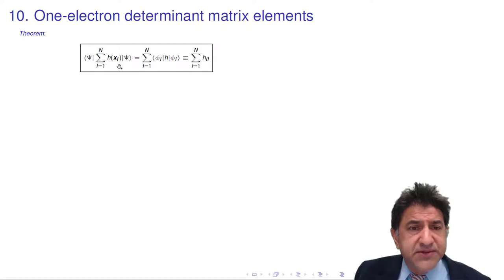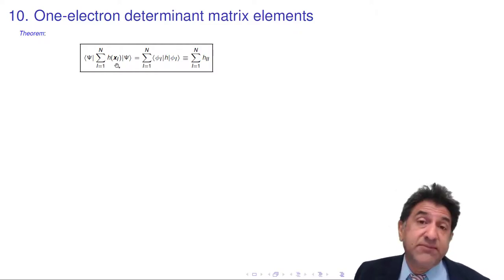Now this is a symmetric term because all electrons are identical. If I permute any of these electrons in the summation, it doesn't change it. So the Hamiltonian, at least the one-electron terms in here, doesn't depend on the order in which we label the electrons. It shouldn't, because all the electrons are identical.